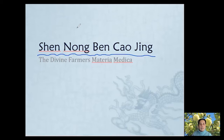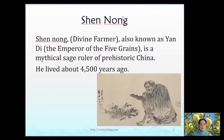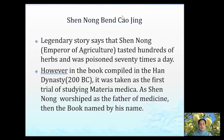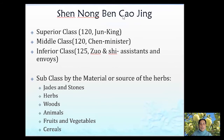Shen Nong Ben Cao Jing separates herbs into three categories: first, the superior category; second, the middle category; and third, the inferior category.